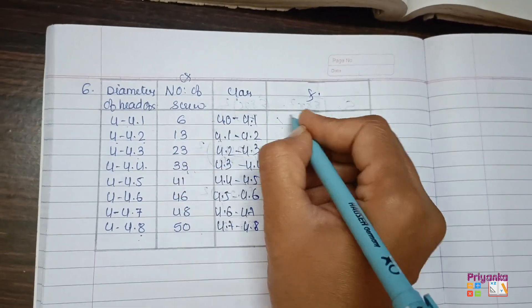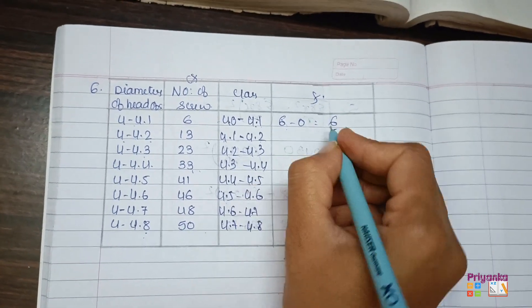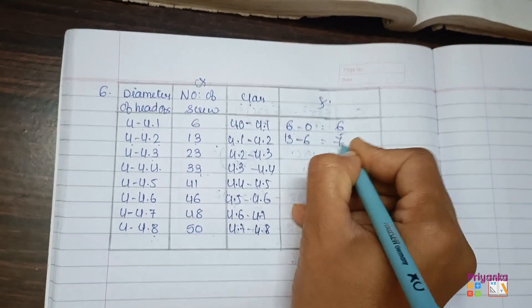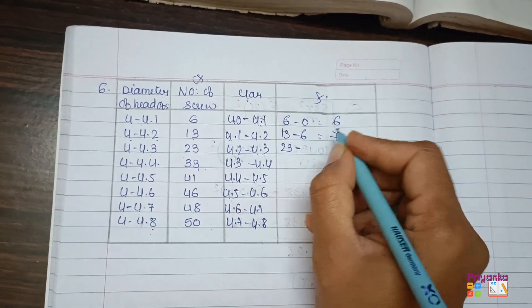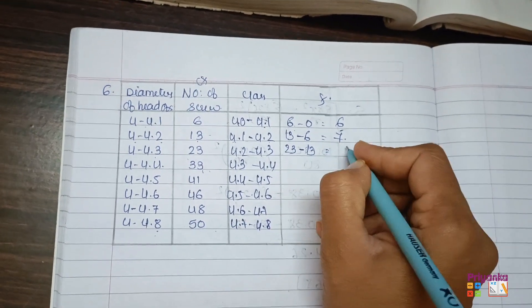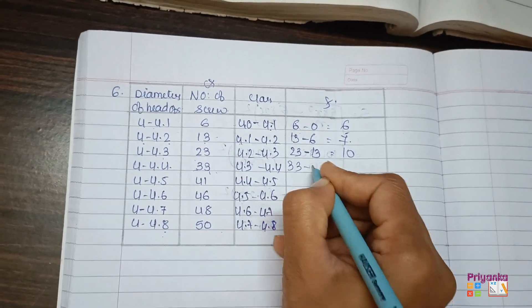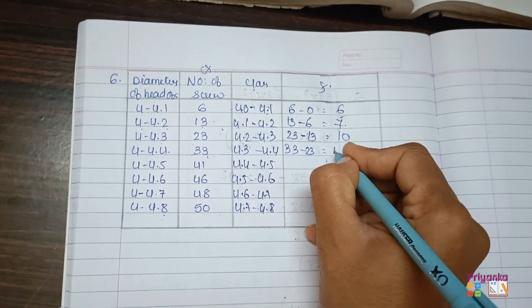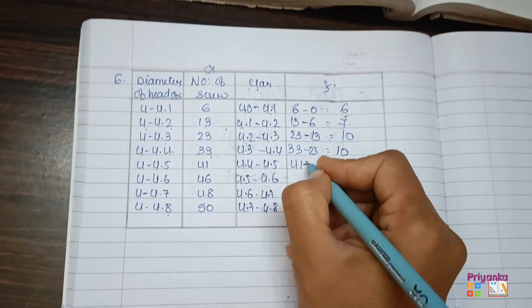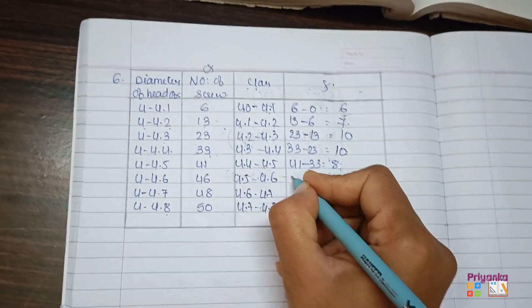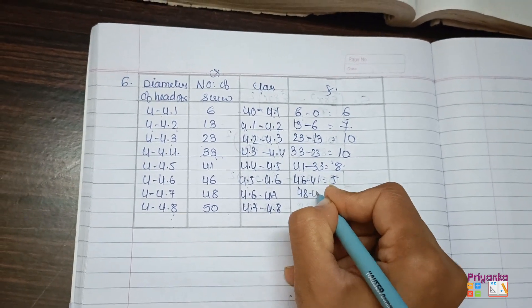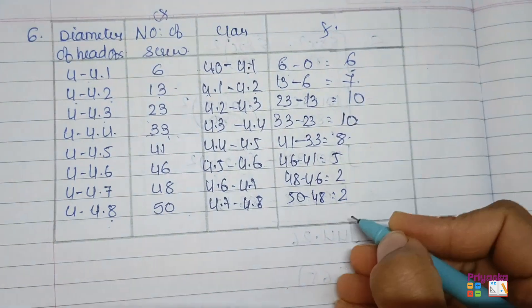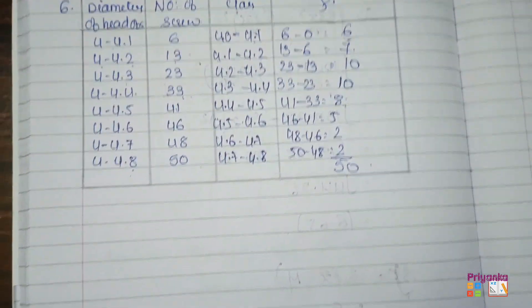Out of the cumulative frequency, I need the correct frequency. So to find the frequency, we'll take first 6 minus 0, we'll take it frequency as 6 only. Then we'll take 13 minus 6, you will get 7. Then take 23 minus 13, you'll get 10. This is just for the explanation. Next is 41 minus 33, that is 8. 46 minus 41 will be 5, 48 minus 46 will be 2, and 50 minus 48 is 2. So here the total number of frequency is 50.